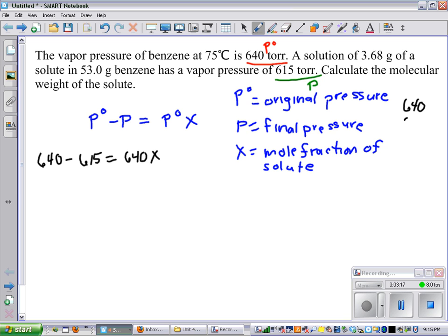640 minus 615 equals 640 times X. 25 equals 640X. Divide both sides by 640, and I get X equals 0.039.